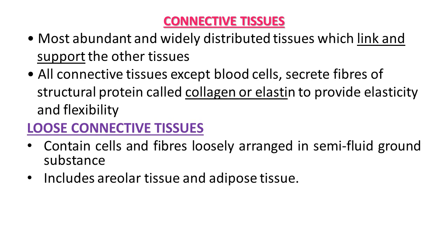The first type of connective tissue is loose connective tissue. It contains cells and fibers which are loosely arranged in a semi-fluid ground substance, which is why it is known as loose connective tissue. This tissue includes two types: areolar tissue and adipose tissue.